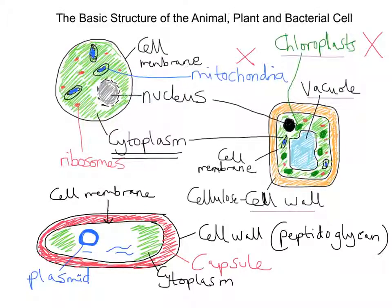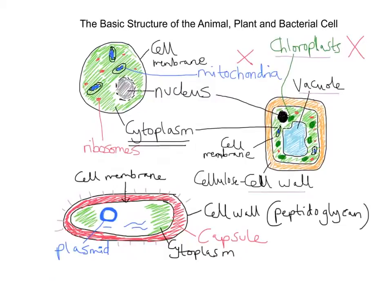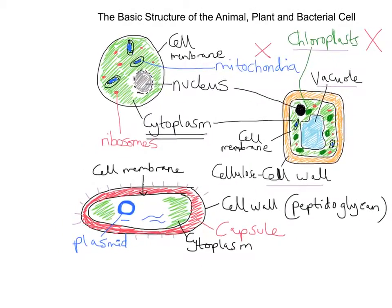Just for completeness — at key stage three you wouldn't need these — but on the outside there are little small extensions that I've coloured in purple here. Each one is called a pilus, and collectively they're called pili — P-I-L-U-S. These pili are designed to communicate with other cells, specifically other bacterial cells.